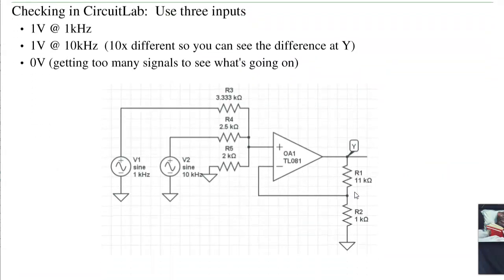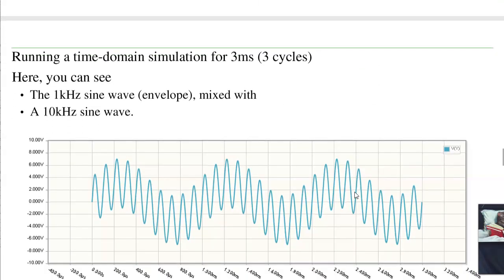In CircuitLab, I can check that answer. Now, this gets a little complicated when I have three inputs. So what I'm going to do to keep everything manageable, I'll make the first input a 1kHz sine wave, the second input a 10kHz sine wave so you can see the difference, and the third will just tie to ground because I have too many things varying.